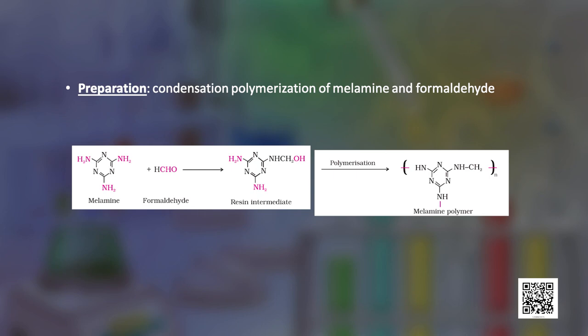A condensation polymer used in making unbreakable crockery is melamine formaldehyde polymer. It is prepared by the condensation polymerization of melamine and formaldehyde, and the sequence of steps in the reaction are depicted in the equation.